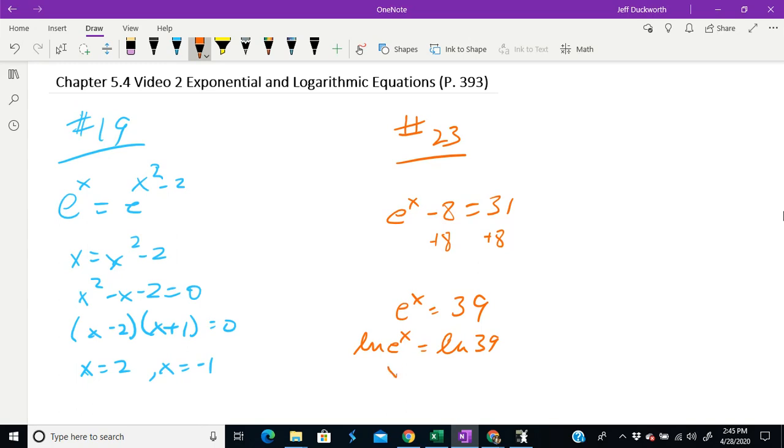That means that x equals ln of 39, and the question asks us to approximate to three decimal places, so that comes out to 3.664.